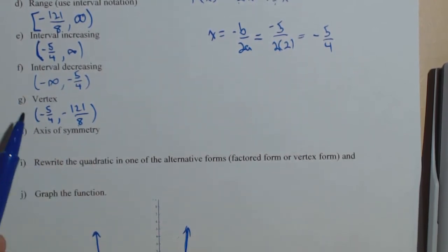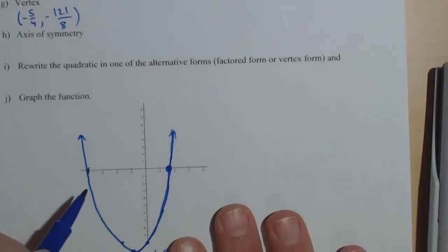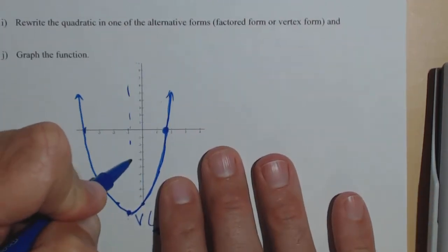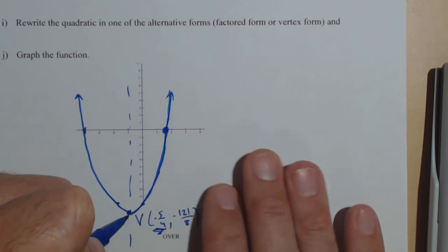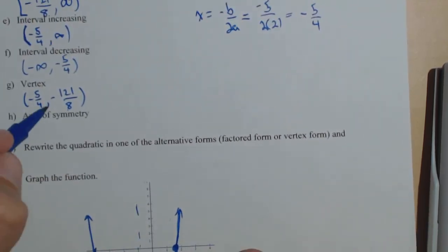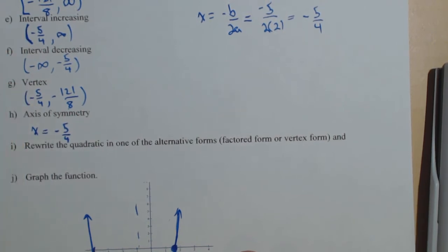The axis of symmetry we've actually already found too because that's that vertical line that cuts this guy in half. Well notice it goes right through our vertex. So the axis of symmetry is an equation. So you do need x equals. It's just the x-coordinate of your vertex. X or whatever variable your function is in terms of.